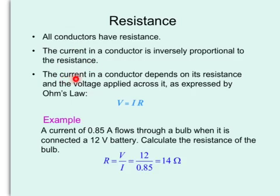The current in the conductor depends on its resistance and the voltage applied across it. As expressed by this Ohm's law that you're all familiar with. V equal to IR. And here's a simple example showing you how the formula works.